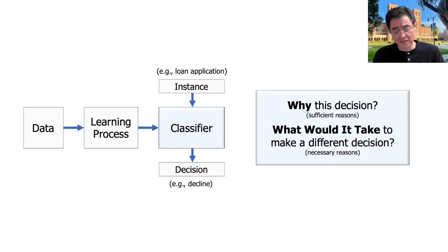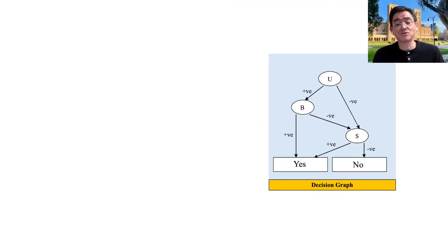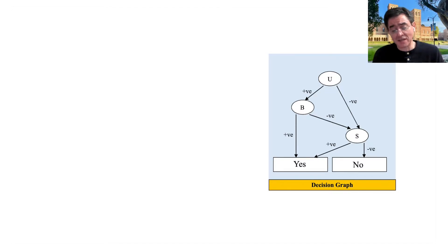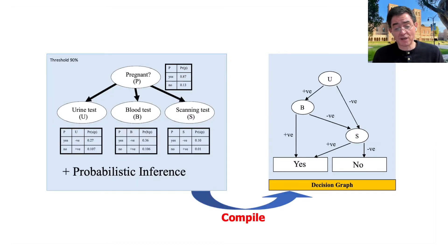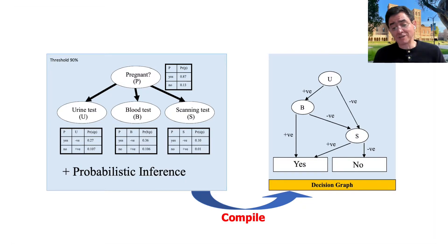We'll find that the first question is related to the notion of sufficient reasons, and the second one is related to the notion of necessary reasons behind a decision. There are a lot of results in this paper, but you'll see me talk a lot about decision graphs in particular. Decision graphs and trees are important types of classifiers; they get learned, but we can also compile decision graphs from other types of machine learning classifiers, for example Bayesian network classifiers. So when we're able to explain decision graphs, we're able to explain these other classifiers as well through this compilation process.